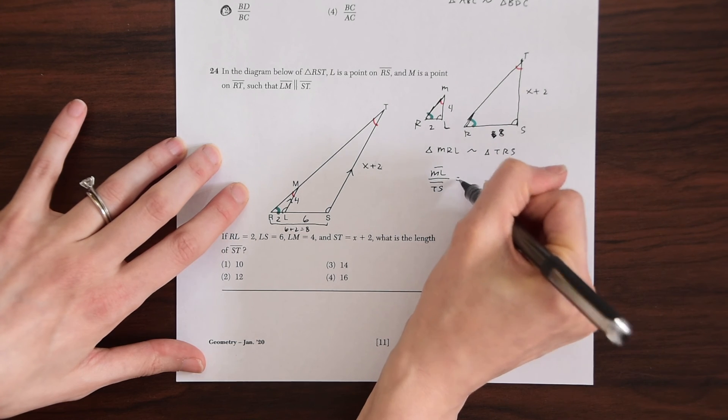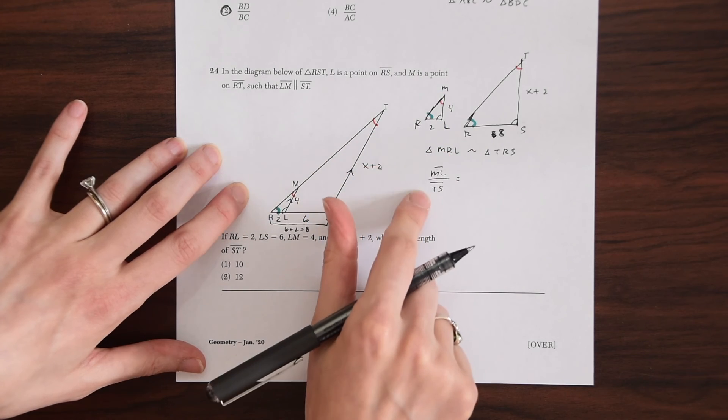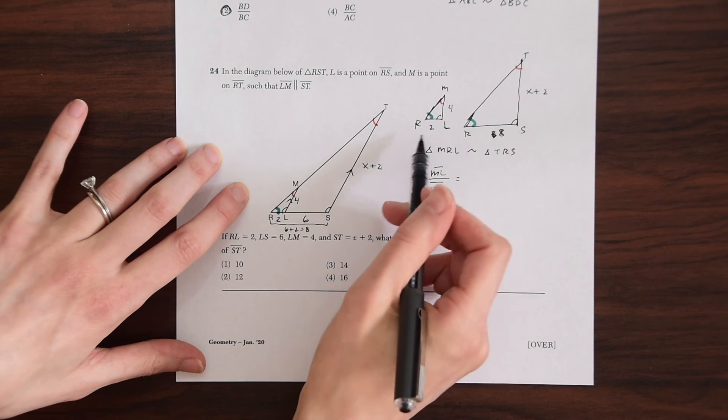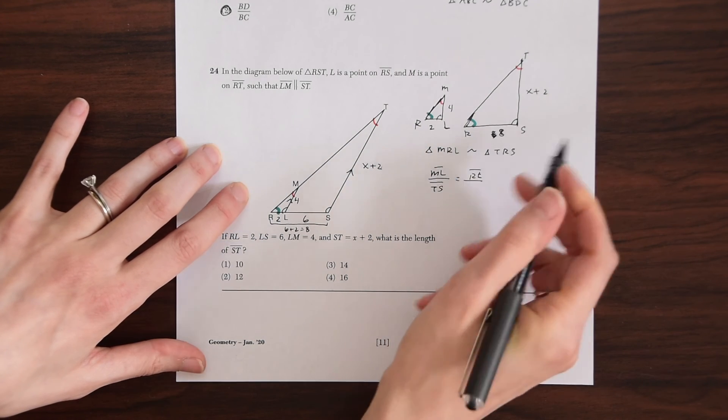So we could see what each side is corresponding to. So ML to TS is going to be equal to RL over RS. That's an L.